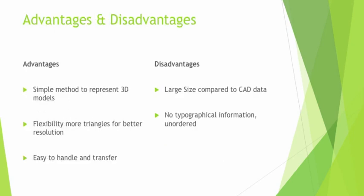Moving on to the advantages and disadvantages of STL. The advantages are that STL is a very simple method to represent a 3D model, which is important so that the next step — slicing, covered in the next video — is much easier to calculate because it's mainly just vertices and linear lines. STL is also flexible, as the number of triangles can be increased or decreased by various software for better resolution. For example, when converting to STL in SOLIDWORKS you can choose a coarse or fine mesh, and this can be further improved by other software. STL files are also easy to handle and transferable, since each triangle is just 12 numbers.